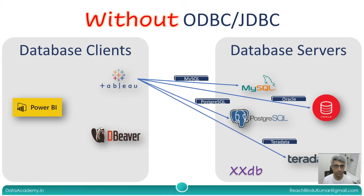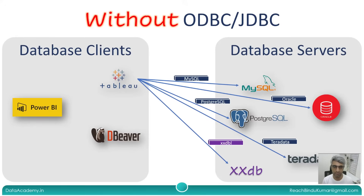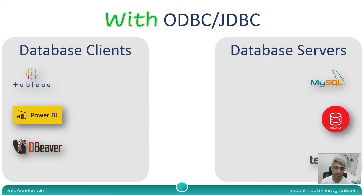Imagine a new database is created sometime in the future — let's call it XXDB. Tableau will not be able to immediately connect to this. What Tableau will have to do is build a special interface that talks to this database using the new database's language or library. This applies for any database client like Power BI, DBeaver, Tableau, and many others. Now let's consider a scenario where we have ODBC and JDBC. Here again we have database clients and database servers, but in between we have introduced ODBC and JDBC as well.